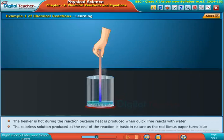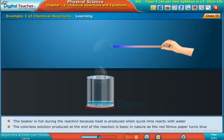The colorless solution produced at the end of the reaction is basic in nature, as the red litmus paper turns blue. Now let us do another activity to learn about chemical reactions.